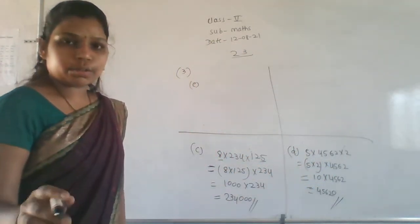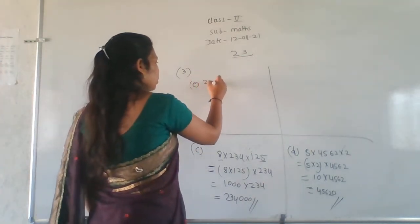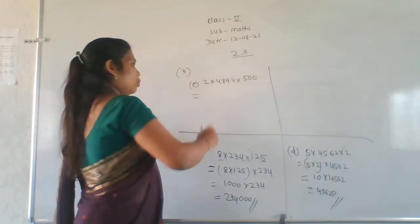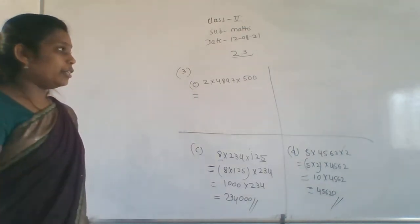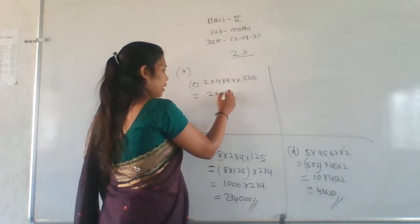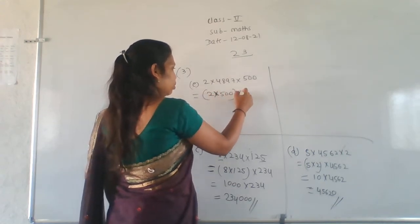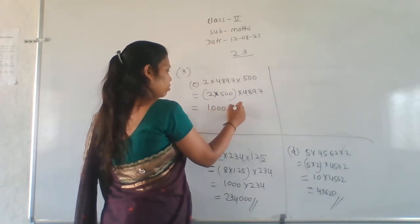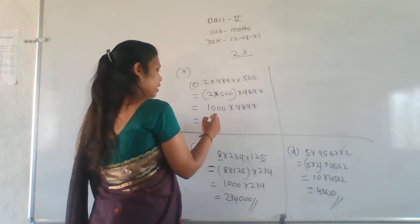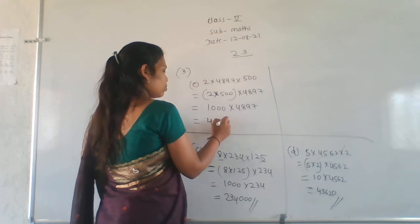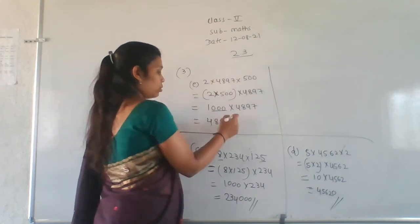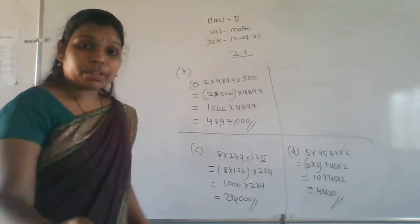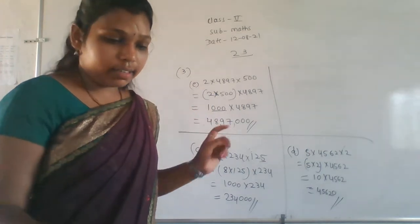Problem E: 2 into 4897 into 500. Make a group of 2 into 500, which gives 1000. So 2 into 500 is 1000, then 1000 into 4897. Multiply 4897 by 1 gives the same answer, then write three zeros. The answer is 48,97,000.